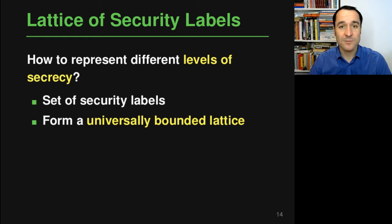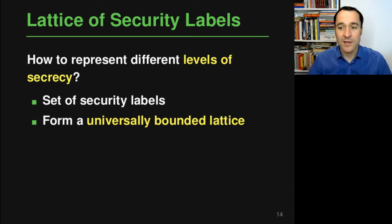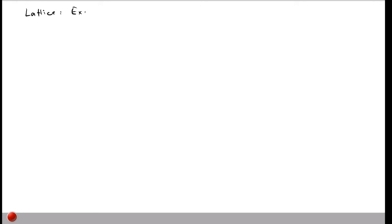Intuitively, a universally bounded lattice is a way to define different levels of security and to define what happens when information with different security levels is combined, so that you know what security level the combined value will have. Let's start by showing a few examples of these lattices and then formally define how a lattice looks.